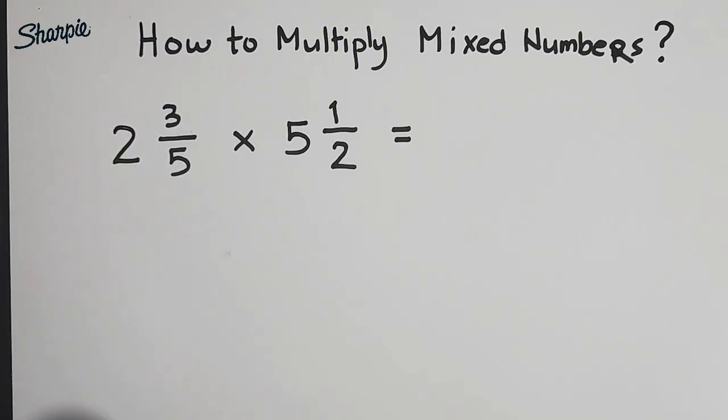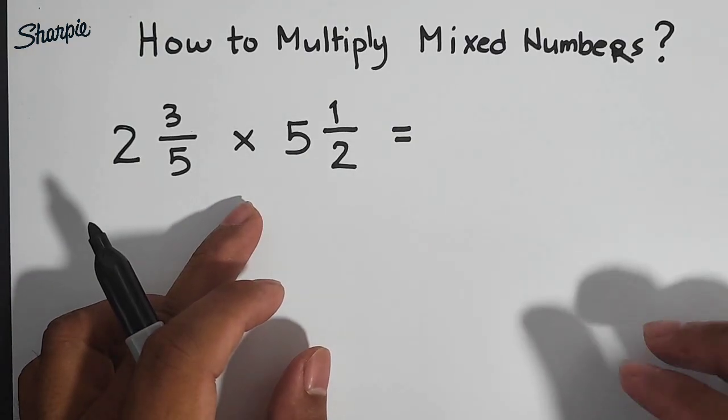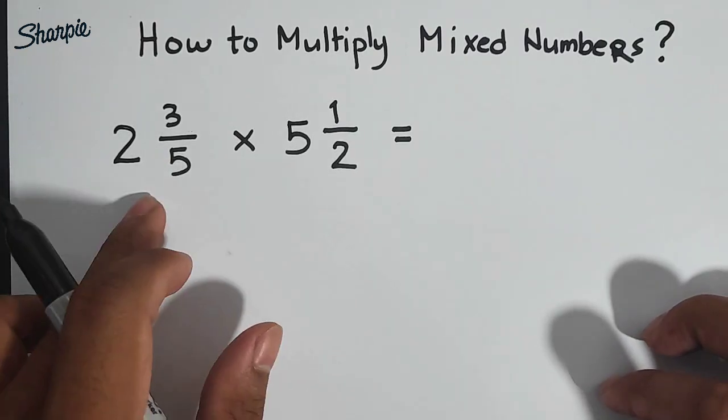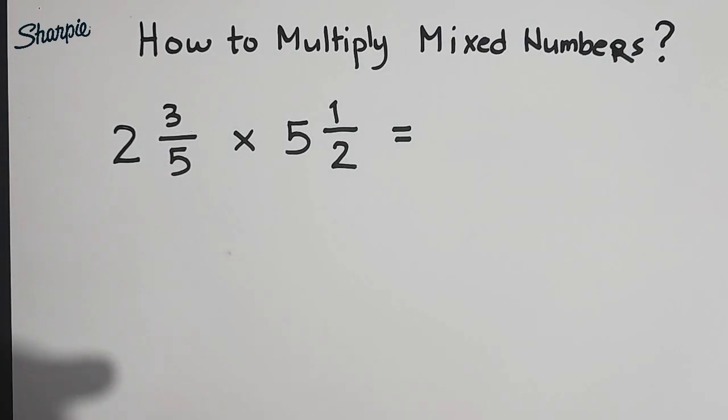Lazada and Shopee. So without further ado, let's do this topic. In multiplying mixed numbers, here are the steps. First, we will convert the mixed numbers into improper fractions. Second, we will multiply the fractions. And third, we will simplify the fractions.